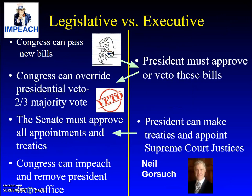Looking at the legislative versus the executive and the checks on each other: Congress can pass new bills, and in order for a bill to become a law, the president must approve or veto it. Congress can override a presidential veto with a two-thirds majority. The Senate approves appointments, the president makes appointments and treaties, and Congress can impeach and remove the president from office.